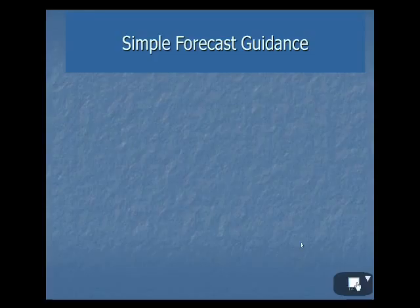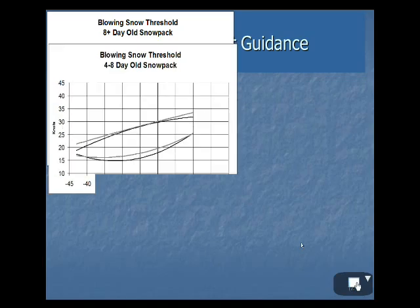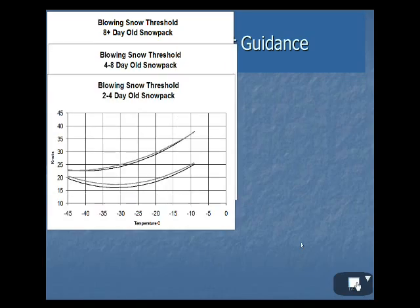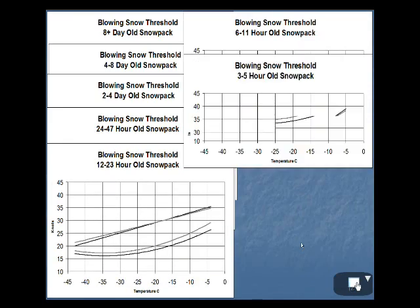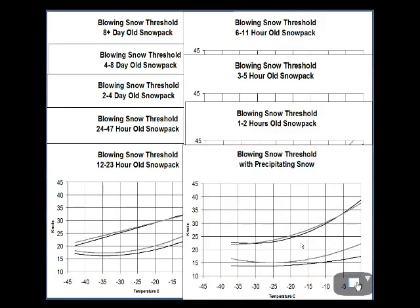Here's some sample forecast guidance used in the model — a bunch of nomograms. One shows the blowing snow threshold without concurrent falling snow but for a fresh snowpack, and a bunch of nomograms can be created for different situations. The last one would be blowing snow with precipitating snow.